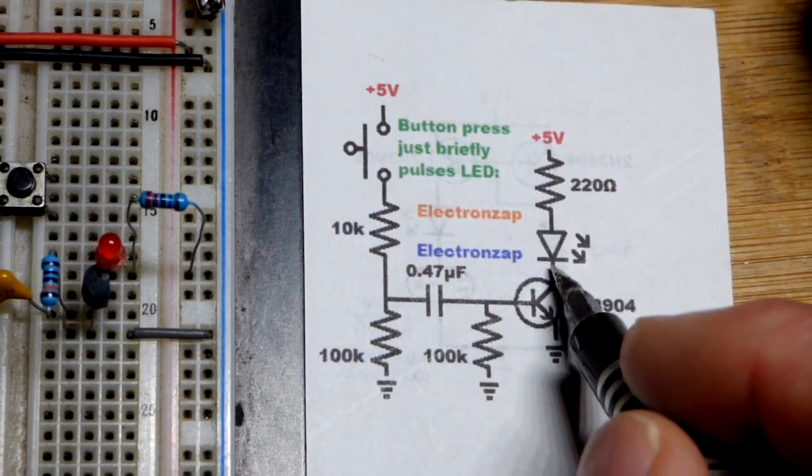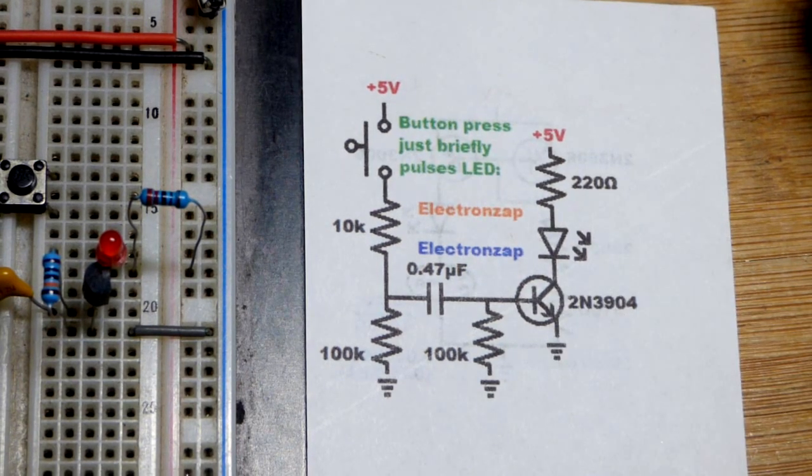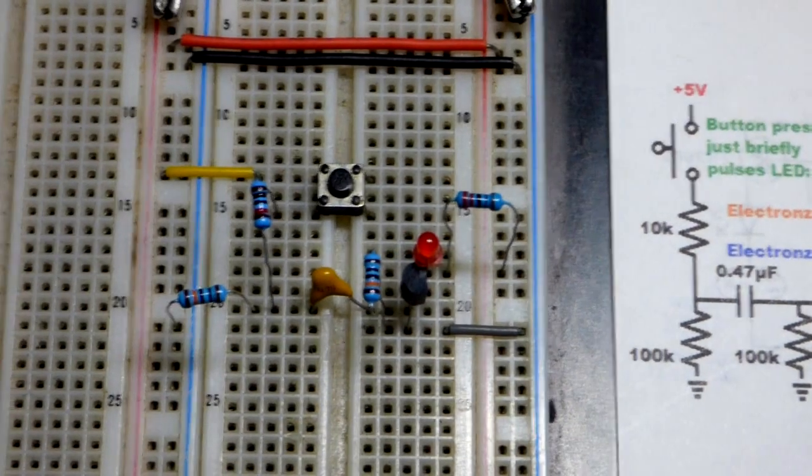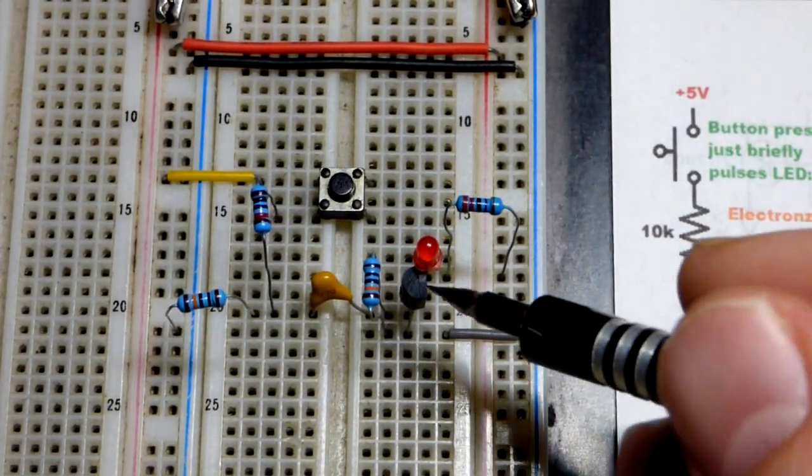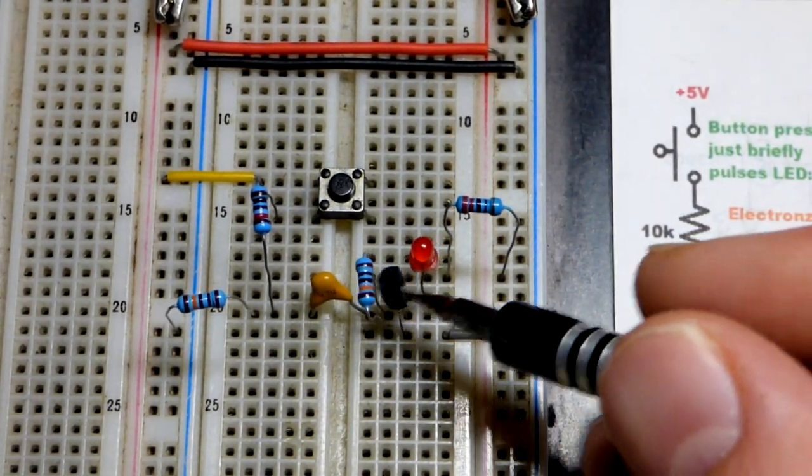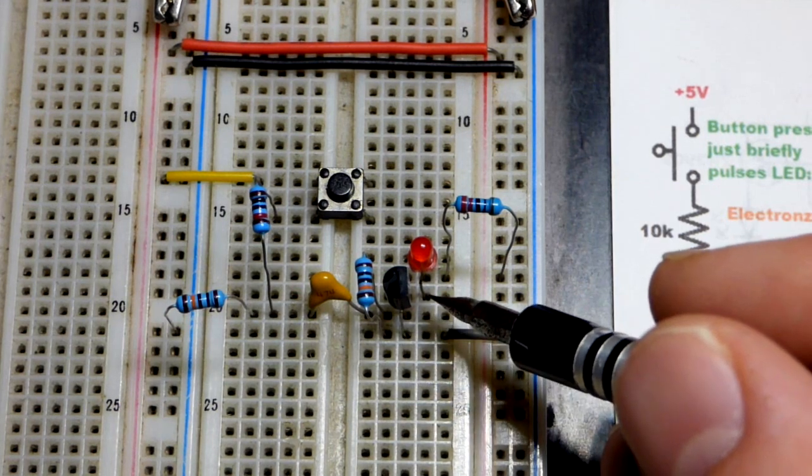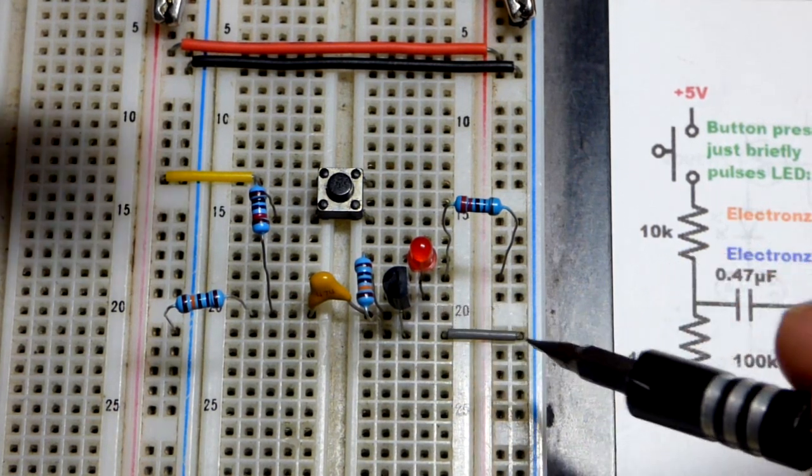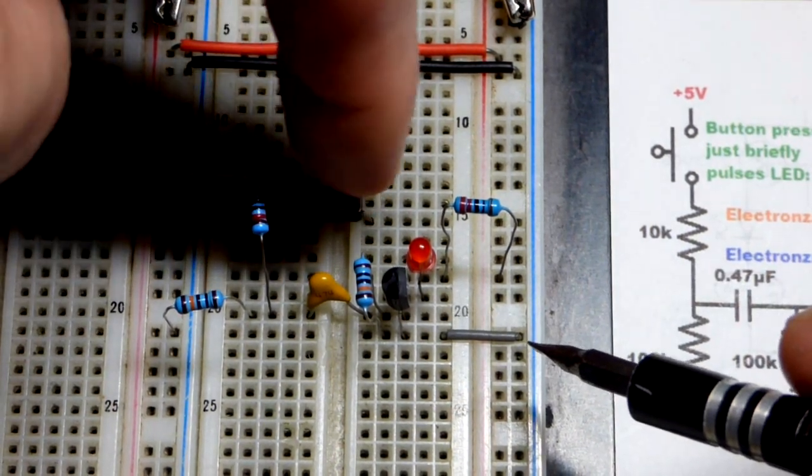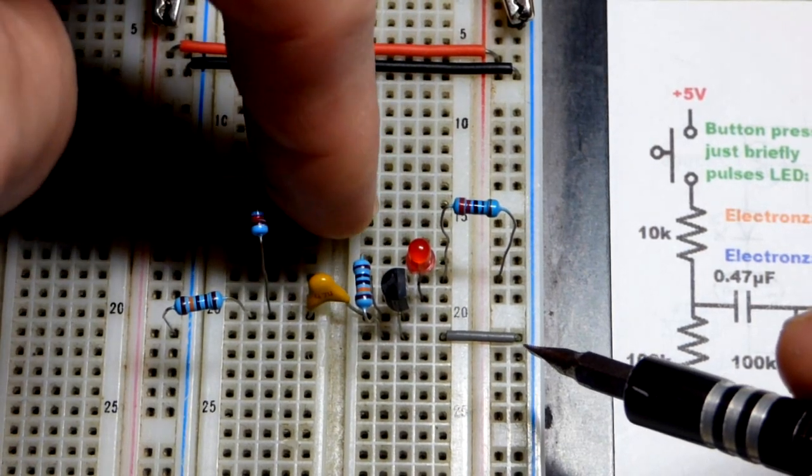So red LED protected by 220 ohms from 5 volts right there and we see our flash. So I'm using the 2N3904, any NPN bipolar junction transistor should work, but we got the emitter, base, collector there. It might have a different pin layout if it has a different part number.